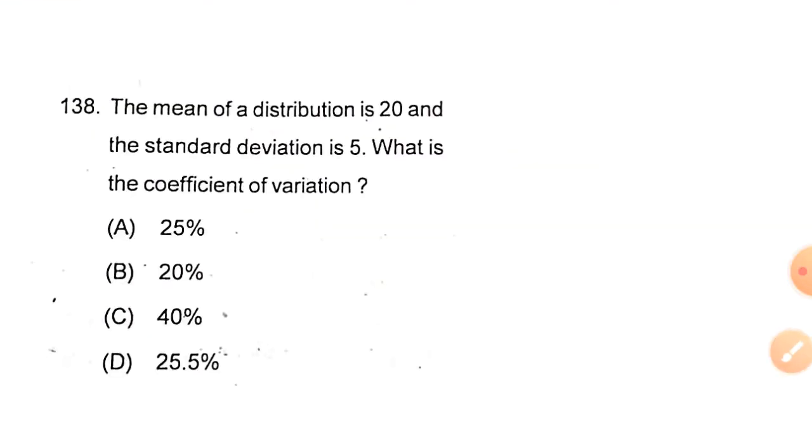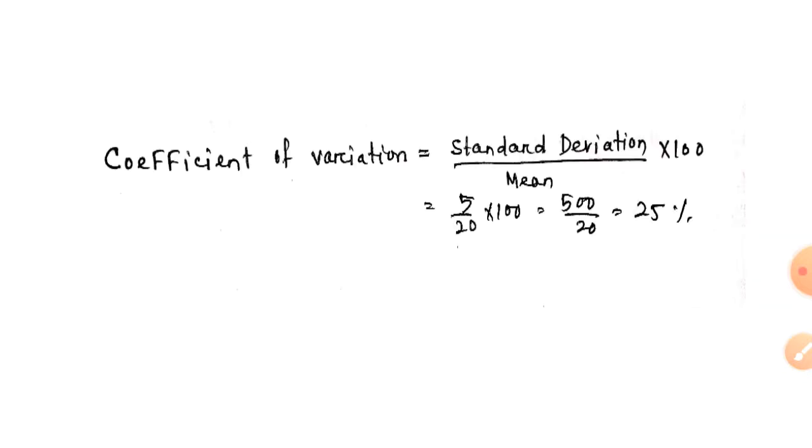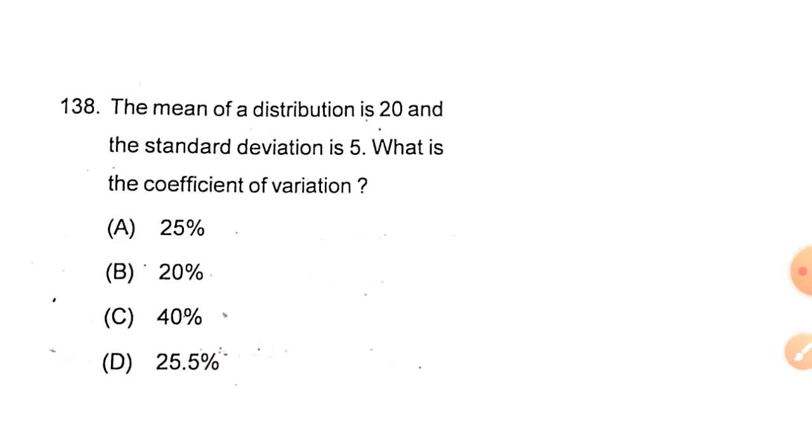The mean of a distribution is 20 and the standard deviation is 5. What is the coefficient of variation? The coefficient of variation is standard deviation divided by mean into 100, so the answer is 25 percent. The answer is option A.